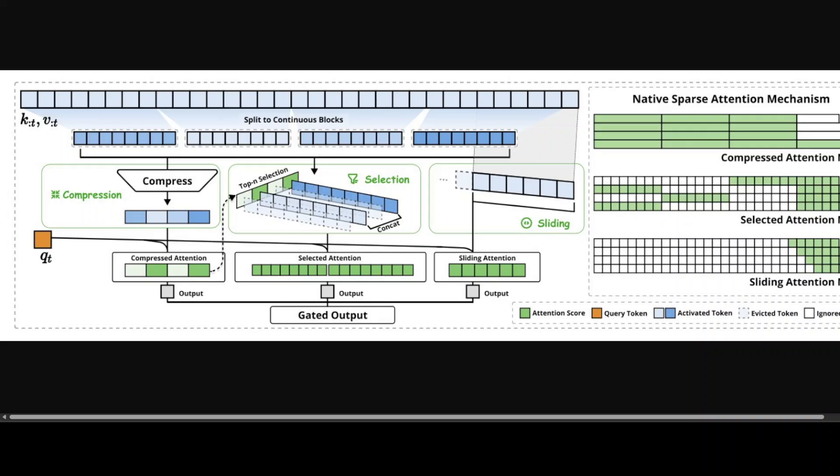Starting from the left, the framework processes input sequences through three parallel attention branches. For a given query, preceding keys and values are processed into compressed attention for coarse-grain patterns, selected attention for important token blocks, and sliding attention for local context.